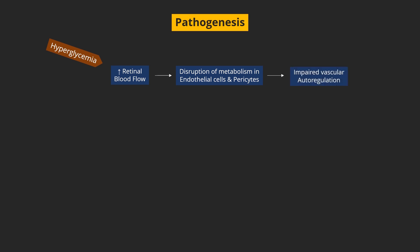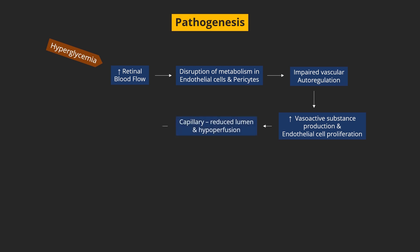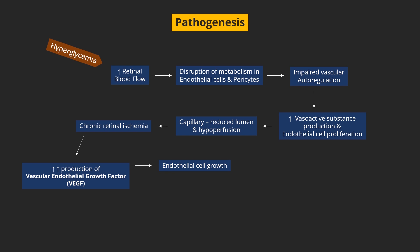This leads to impaired vascular autoregulation, and production of vasoactive substances and endothelial cell proliferation is increased. The resulting capillary hyperperfusion causes chronic retinal ischemia, stimulating the production of growth factors, including vascular endothelial growth factor or VEGF. VEGF further stimulates deleterious endothelial cell growth and also increases vascular permeability, resulting in new vessel formation, retinal leakage, and exudation.